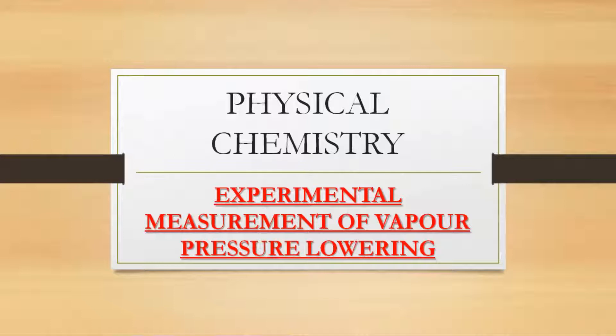One example of this is lowering of vapor pressure. When a non-volatile solute is dissolved in a solvent, the solution's vapor pressure becomes less than that of the pure solvent. This phenomenon is called lowering of vapor pressure.